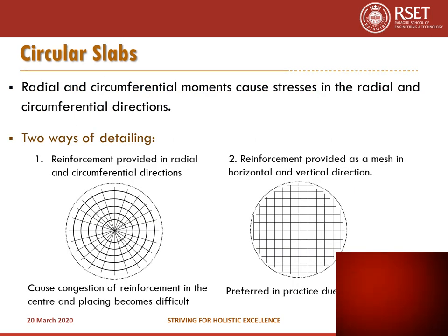Circular slabs have radial and circumferential moments causing stresses in the respective directions. There are two ways of detailing a circular slab. One is to provide reinforcement in the radial direction and in the circumferential direction as rings. The problem with this detailing is it creates a lot of congestion in the center portion, making placing difficult.